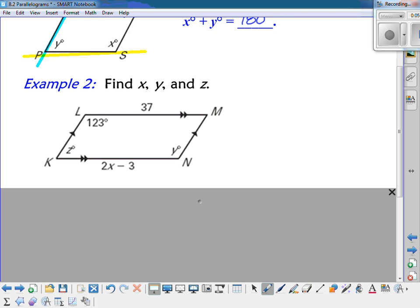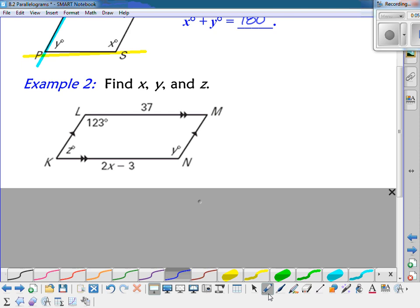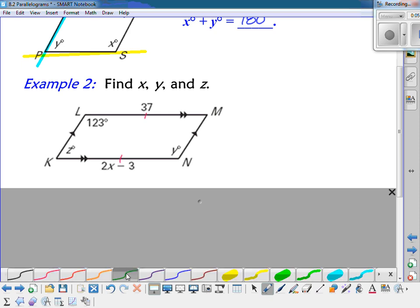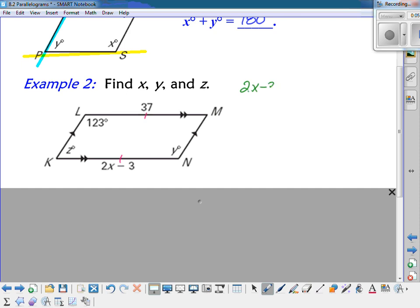We are going to find the values of x, y, and z on this figure. So first of all, to find x, I know that my opposite sides are congruent to each other. So that means that 2x minus 3 has to equal 37. If we add the 3, we get 2x is equal to 40. And divide by 2, x is equal to 20.